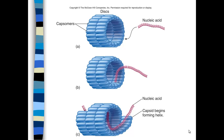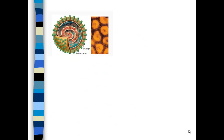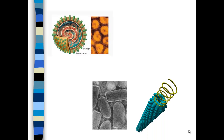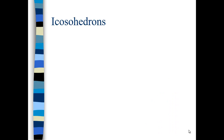Here's the helical capsid. You can see multiple capsomers form discs, and then the nucleic acid wraps around the inside of the discs and attaches to form a helix. The capsid begins to form a helix around the nucleic acids. Here's a helical nucleocapsid with an envelope membrane around the capsid, and here's one with no envelope — it looks like little grains of rice in the photomicrograph.